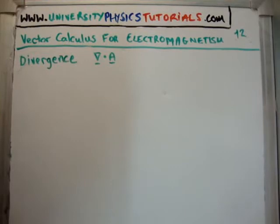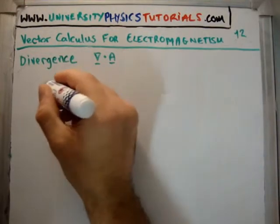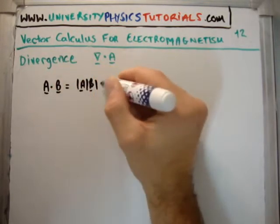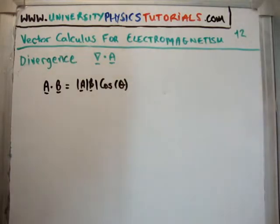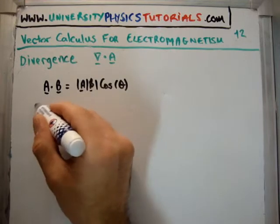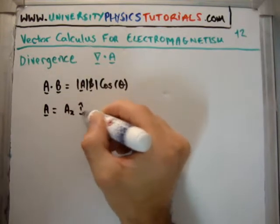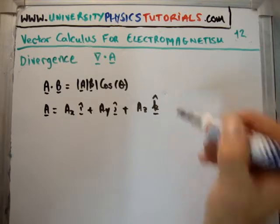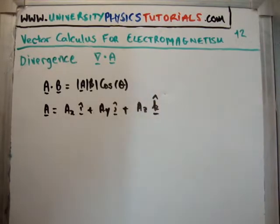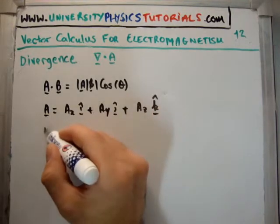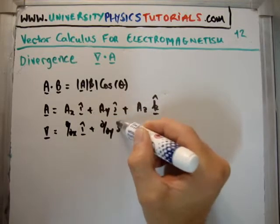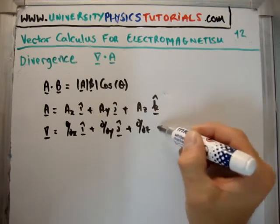Just a reminder on the dot product — if you want to look up how to do a dot product, see video number 2. The dot product of A and B is simply the magnitude of A, the magnitude of B, multiplied by the cosine of the angle in between. But we like to do things in components. So A is going to be Ax in the î direction, plus Ay in the ĵ direction, plus Az in the k̂ direction. And our other vector is the nabla: ∂/∂x in î, plus ∂/∂y in ĵ, plus ∂/∂z in k̂.